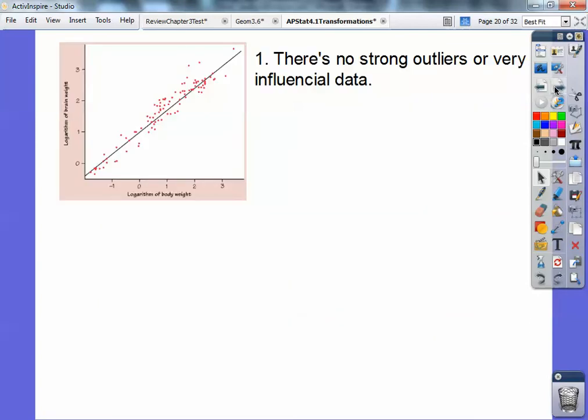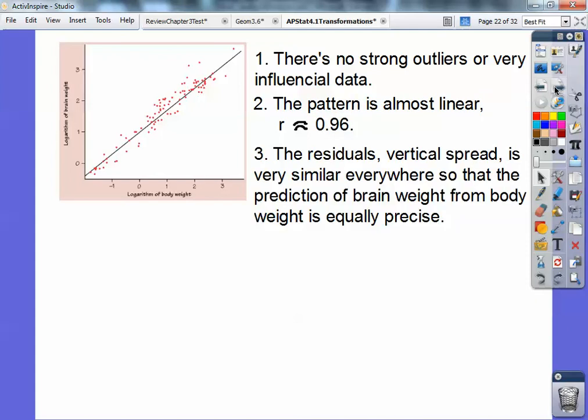This is section C. There's no strong outliers when you log everything or influential data. That is good stuff. The pattern is almost linear, the correlation becomes 0.96. Magical. The residuals, the vertical spread is very similar everywhere. Can't you see these are all really close to the least square regression line right here? So if I did a residual plot on that, it would be very uniform going across. And so then you can get the prediction of your brain weight from the body weight very precisely that way.